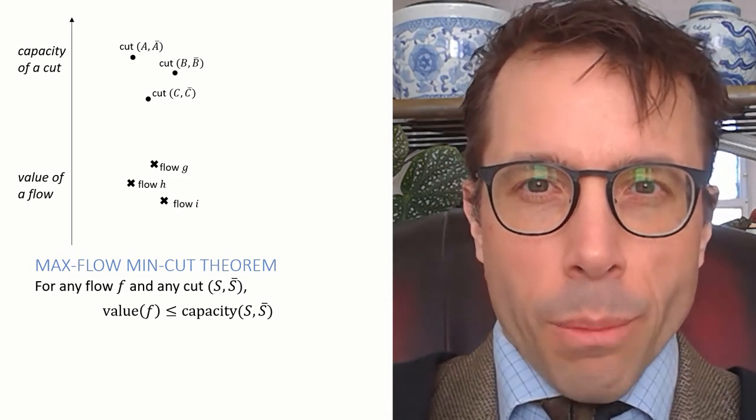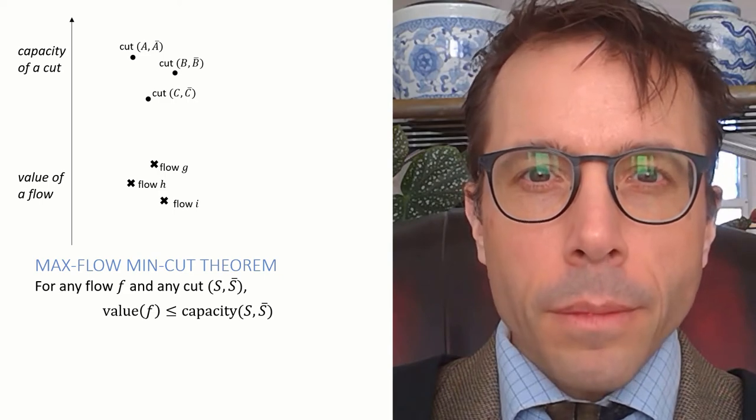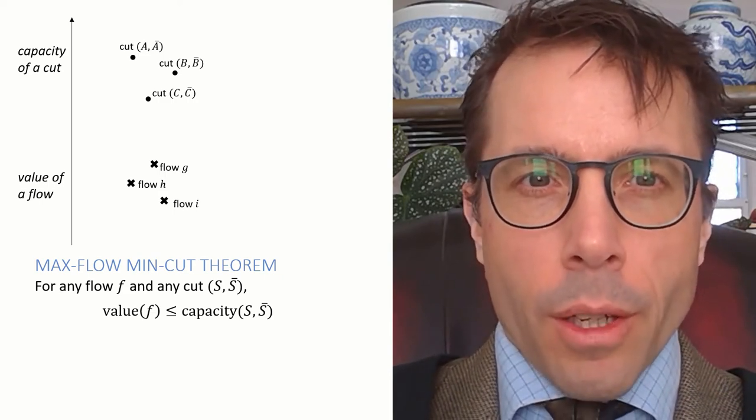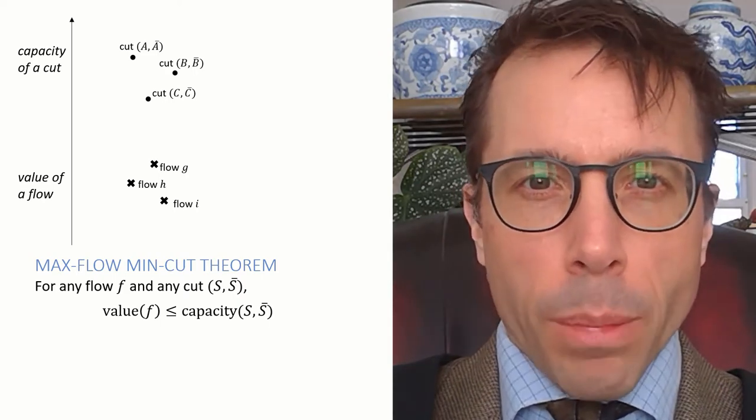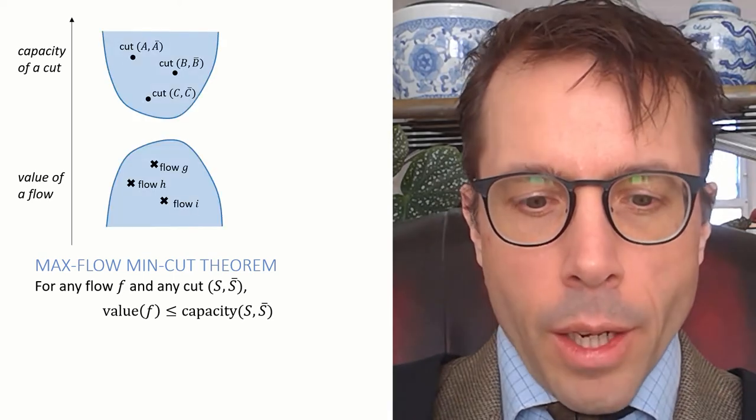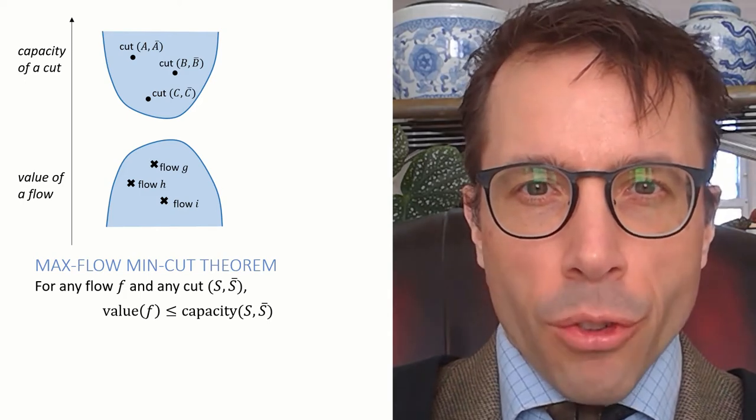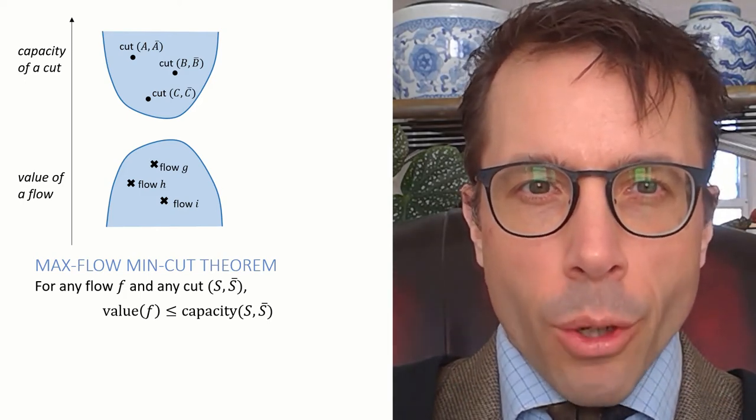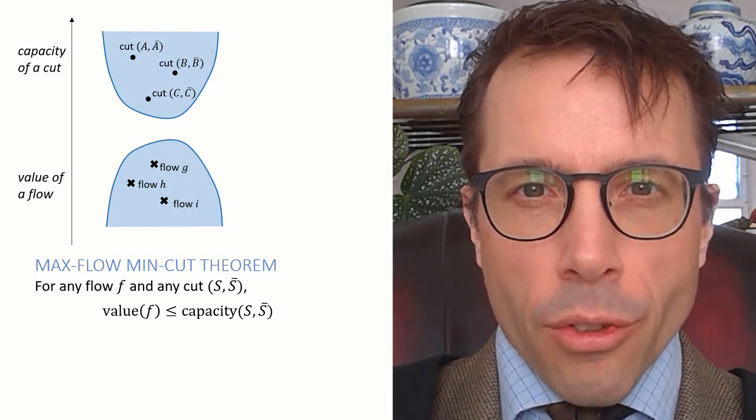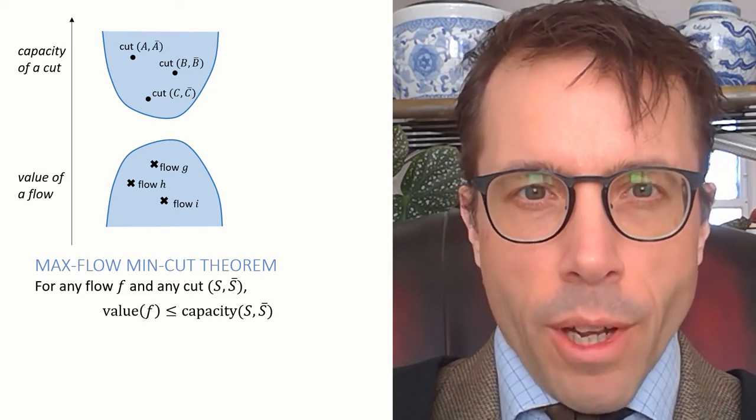And let's plot the capacities of each of these cuts and the values of each of the flows on a chart. The x-axis on this chart doesn't mean anything, it's just there for visual separation, it's only the y-axis that matters. The theorem says that for any flow and for any cut, the value of the flow is below or equal to the capacity of the cut. Now, suppose I draw an envelope of the capacity of every possible cut and another envelope showing the value of every possible flow.